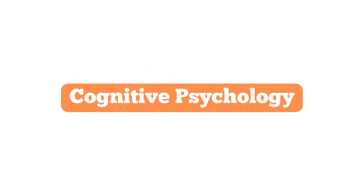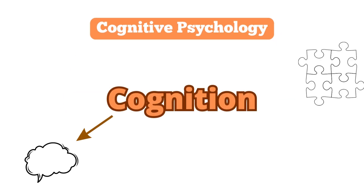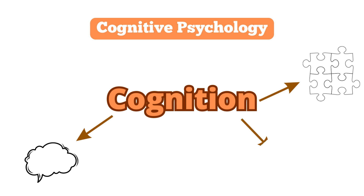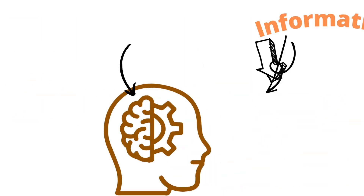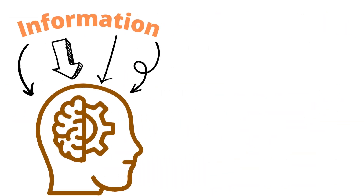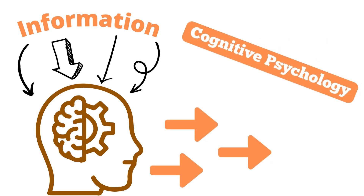Cognitive psychology studies cognition, which can be best summarized as how the brain thinks, understands, communicates, and other processes of that nature. Basically, how your brain processes information and then uses that information is cognitive psychology.